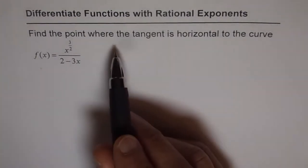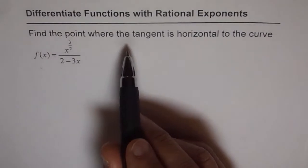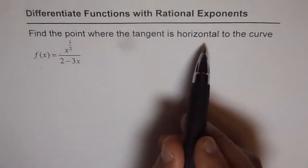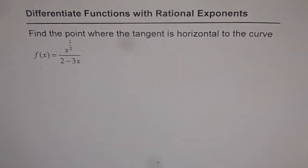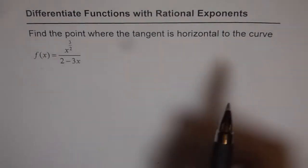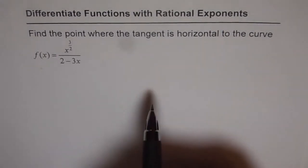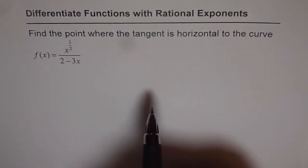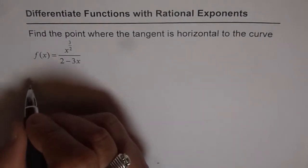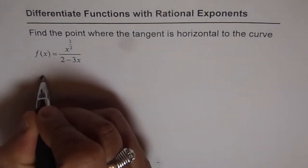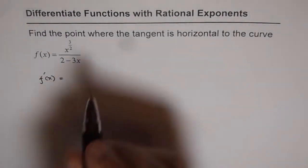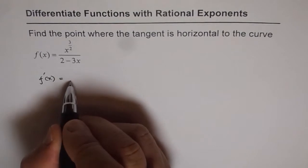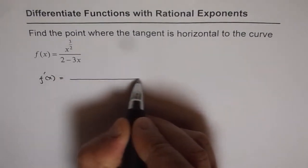To find the point where the tangent is horizontal, we need to find the derivative of this function and equate it to 0. Horizontal means the slope should be 0 for the tangent line. The derivative of this function can be calculated using the quotient rule, so let's use the quotient rule here.